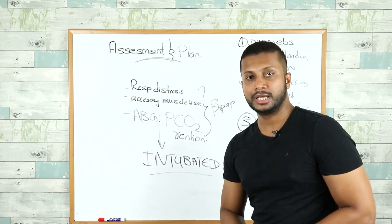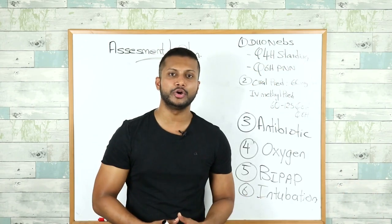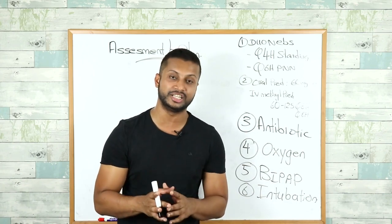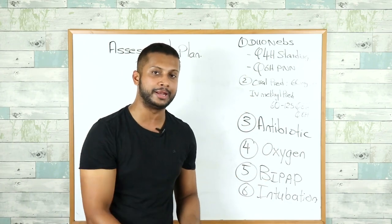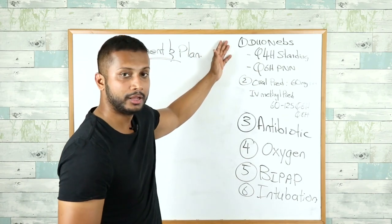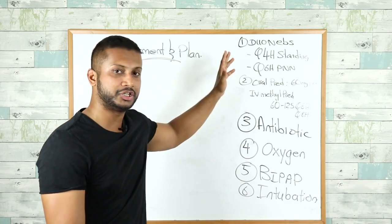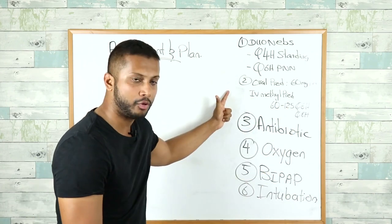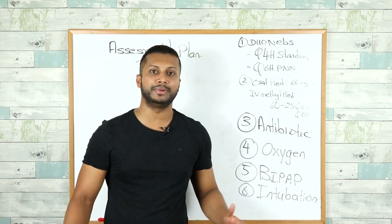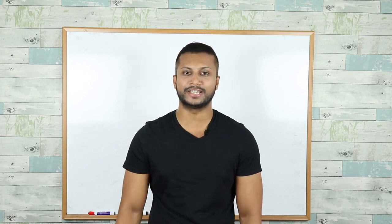This sums up management of COPD exacerbation. The assessment and plan is the most important part you want to learn as an intern. To recap: treatment for COPD exacerbation is bronchodilator therapy, steroids, antibiotics, oxygen — always targeting SpO2 88 to 92% — and always remember when to call your senior to place the patient on BiPAP or intubate. Thank you for watching; please subscribe, and the next video is on CHF exacerbation.